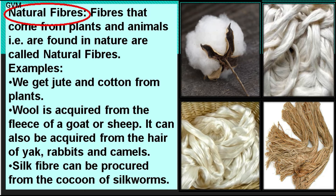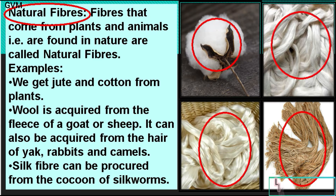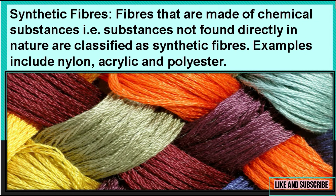Natural fibers are those that come from plants and animals. Since they are obtained from nature, they are called natural fibers — examples include cotton, silk, jute, and linen. We get jute and cotton from plants. Wool is acquired from the fleece of goats or sheep, and also from yak, rabbits, and camels. Silk fibers can be acquired from the cocoon of silkworms.